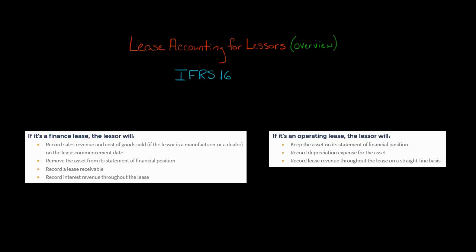Let's say that it's a finance lease. If the lessor is a manufacturer or a dealer — for example, let's say the lessor is Boeing and they're going to be leasing some aircraft to an airline — Boeing has a captive leasing company, Boeing Capital, their subsidiary that's going to handle the lease. So they're a manufacturer or dealer.